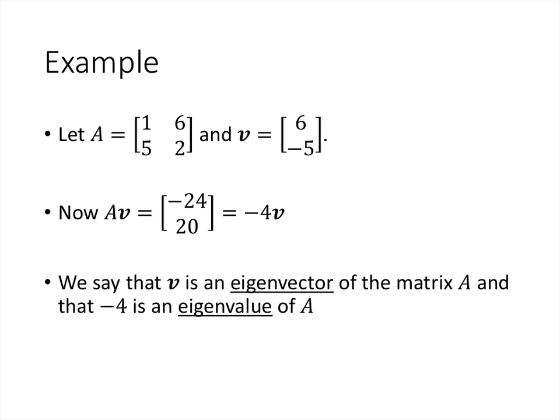Now that's fairly unusual. Most times when we multiply a matrix by a vector, we don't just get a multiple of the vector as a result of that operation, but sometimes we do, and when that happens, we have a special name for it. We say that v is an eigenvector of the matrix A, and that negative 4, the constant multiple, this number here, is an eigenvalue of that matrix A.